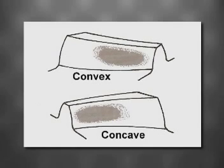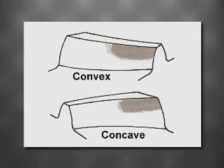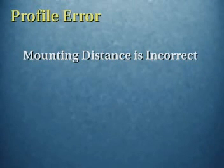When assessing the contact pattern, it's important to look at both the concave and convex sides of the gear and pinion. For the most part, the pattern on both sides of the teeth should be the same. If you find that the contact pattern is incorrect, most likely the pattern will be wrong on both sides. This can occur due to three main errors: profile error, cross contact, and shaft angle error.